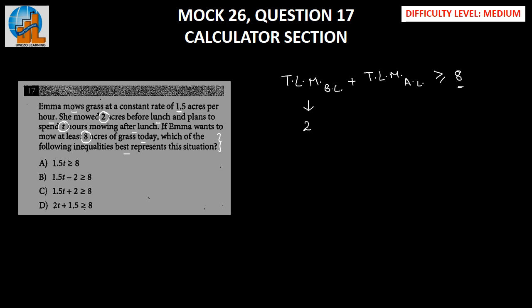In one hour she is mowing a land of 1.5 acres, which implies in t hours she mows 1.5t. This implies 2 plus 1.5t has to be greater than or equal to eight. So this is what our inequality looks like.